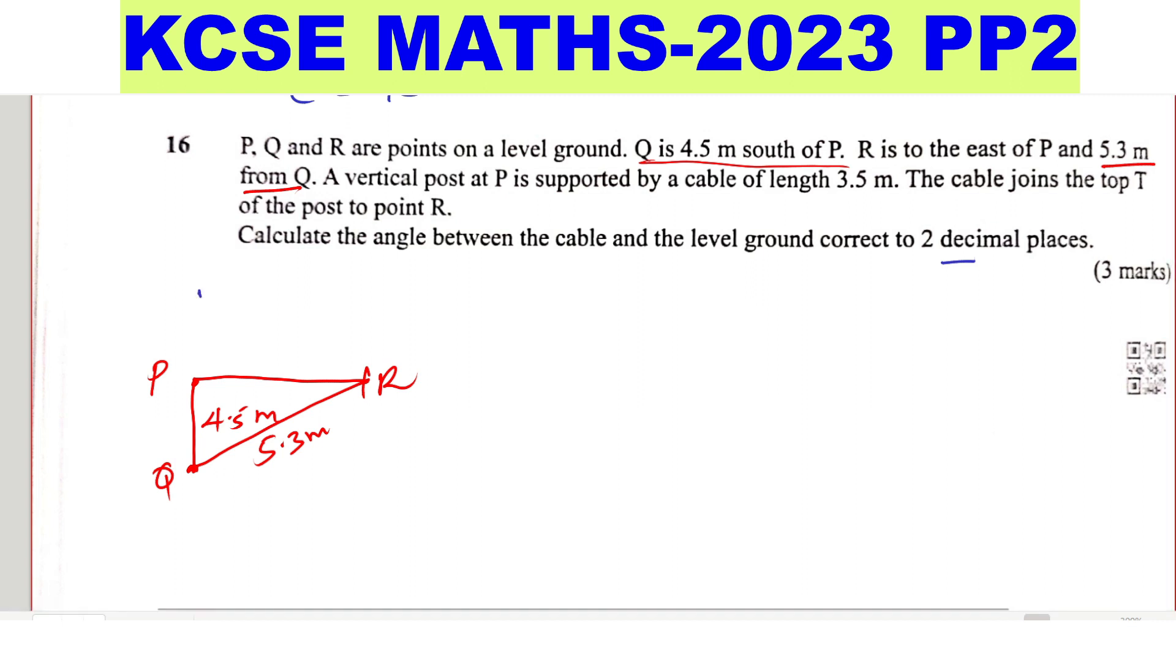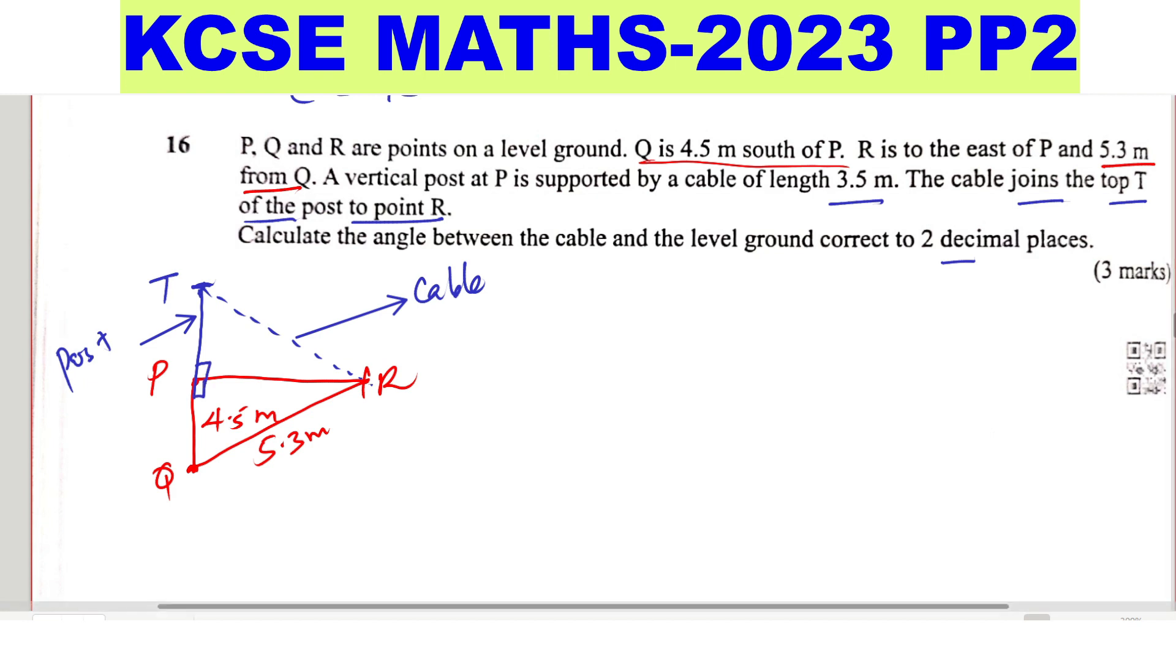So that is the vertical cable and this is the top supported by a cable of length 3.5 meters. The cable joins the top T of the post to point R. So that cable joins this top to R. This is the cable and this is the post. So since this one is a vertical post, that angle is 90 degrees and also this one is 90 degrees.